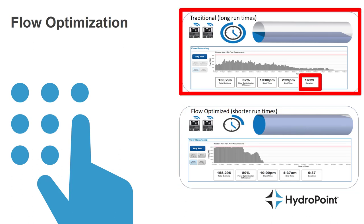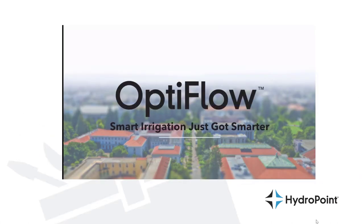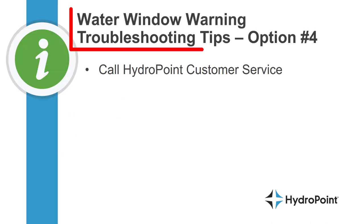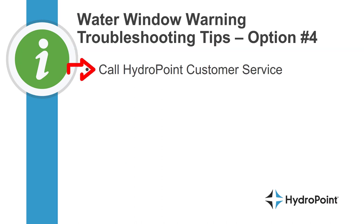This makes the mathematically shortest possible runtime for your irrigation system. In this example, comparing a traditional irrigation program to an optimized program, we subtracted 10 hours from a 16-hour irrigation runtime on a 48-station controller. So while WeatherTrack OptiFlow might require an upgrade to your WeatherTrack hardware, it might be worth the investment if you're tired of battling water windows. And never forget that we're here to help — if you need more help troubleshooting your water window warnings, call on our team at HydroPoint Customer Service.